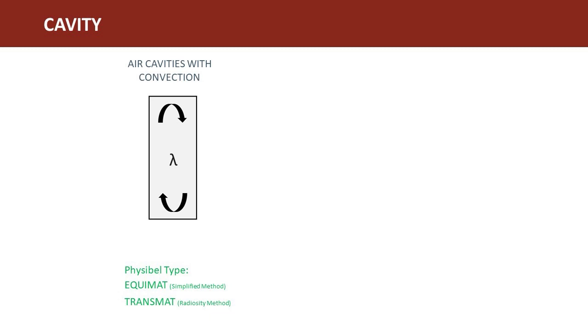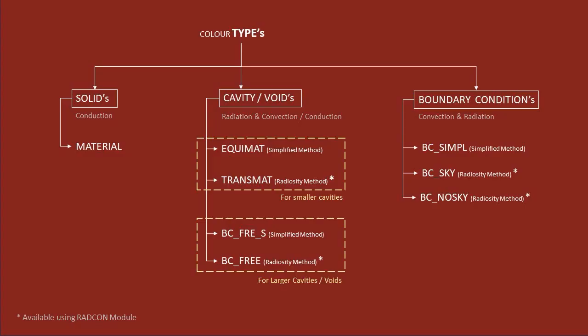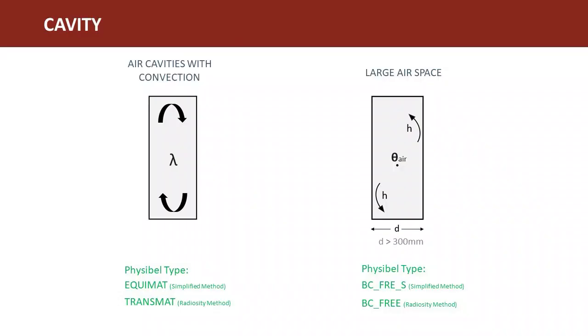For the latter two types, BC_FREE_S and BC_FREE, convection is modeled with one convection node, which assumes perfectly mixed air. This is typically used for bigger cavities, say bigger than 300 millimeters.